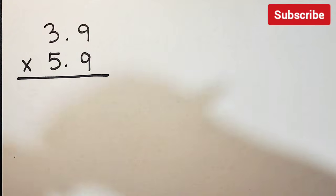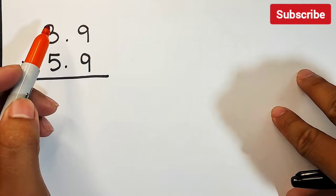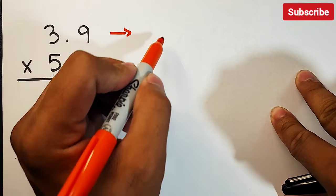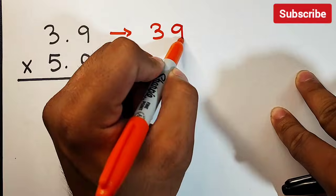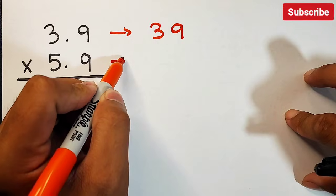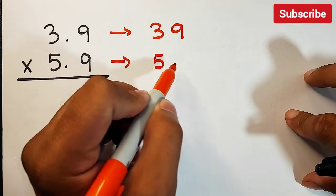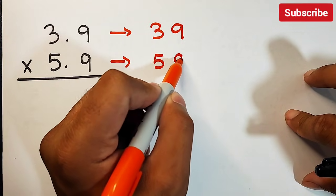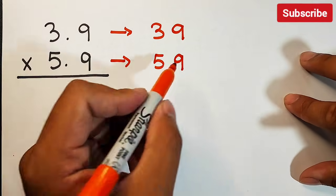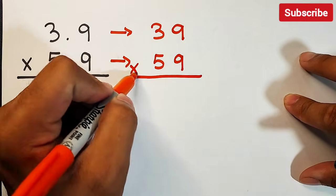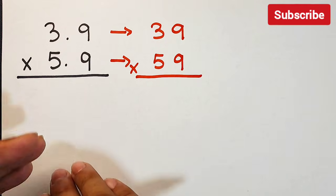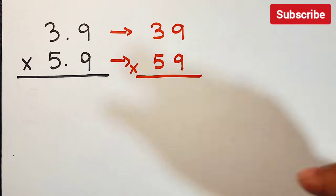We will treat 3.9 as a whole number first — so it becomes 39. Similarly, 5.9 becomes 59. The reason we ignore the decimal points is so we can multiply these numbers as whole numbers. Later on, we will go back and account for the decimals.